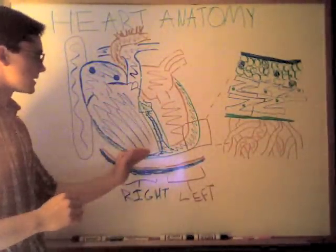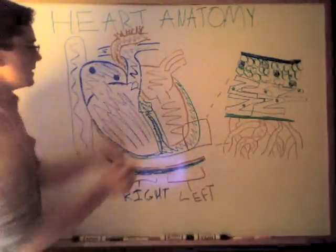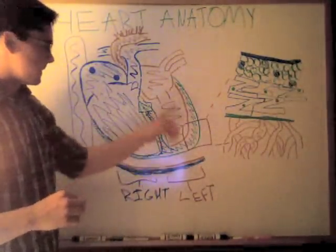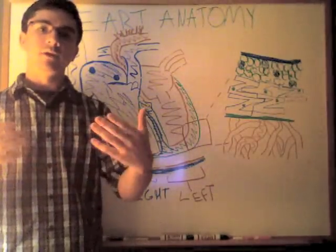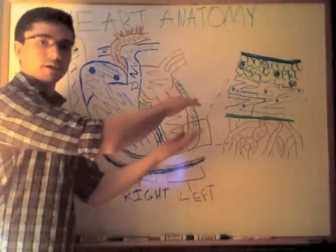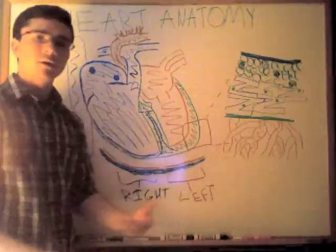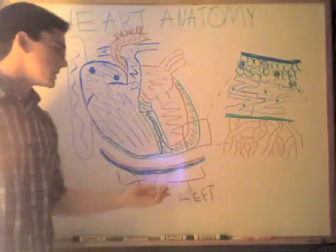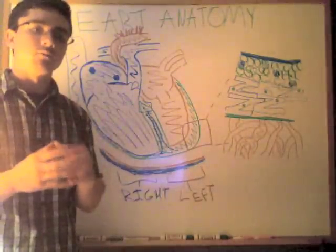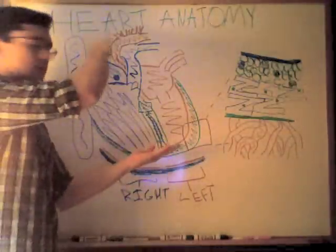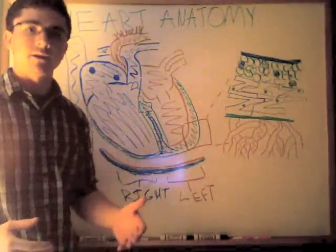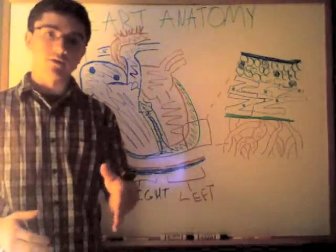On both sides, the heart is going to squeeze like that. Thinking about how the heart contracts — it's going to get smaller, the walls are going to thicken up. Remember, the fibrous pericardium is anchored to the diaphragm, so the heart stays in one place. How does this all work when it squeezes and gets smaller?